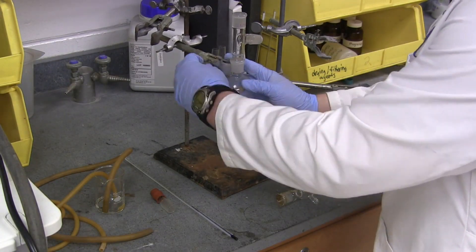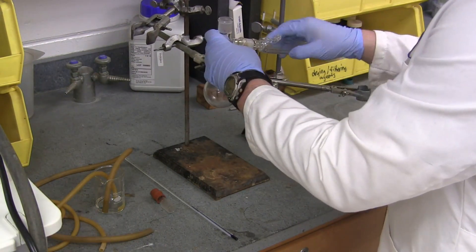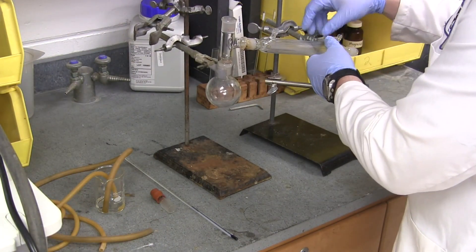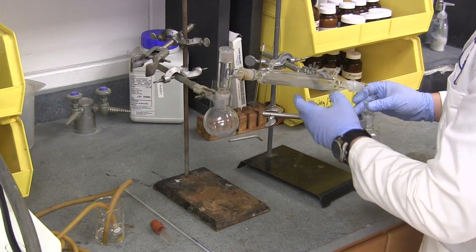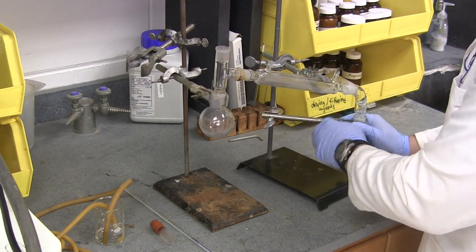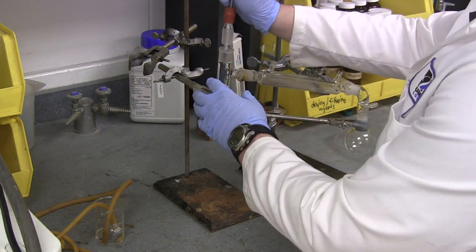For a simple distillation, the distilling flask is connected to a distillation head, which connects to a condenser which leads to a vacuum adapter and the receiving flask. There is also a thermometer adapter connected to the distillation head.